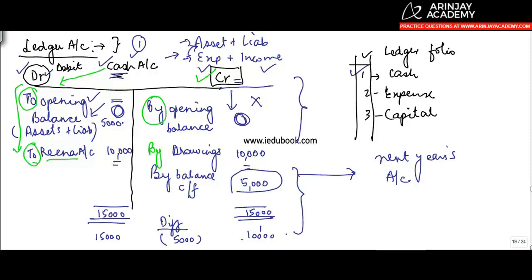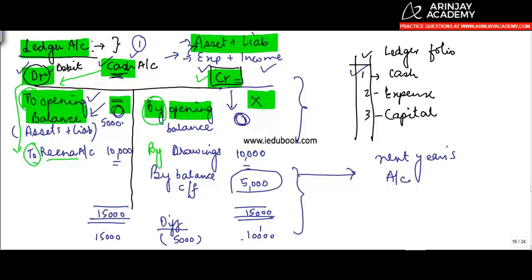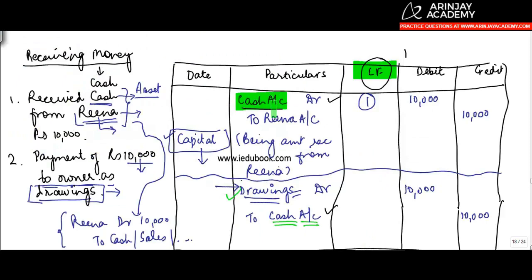In a ledger, you would have the heading; on the left-hand side you have debit; right-hand side you have credit. You may have an opening balance in case of assets and liabilities. Depending on whether it's an asset or a liability, the balance might come on the debit side or on the credit side. Cash account debit to Rena account, 10,000.